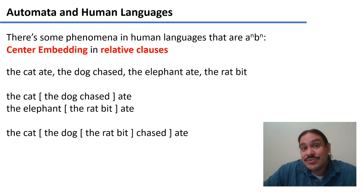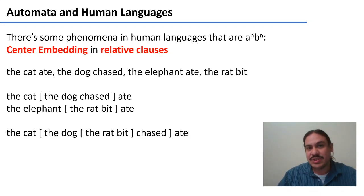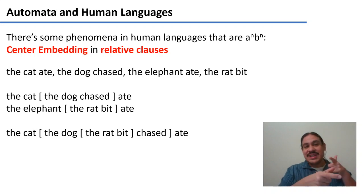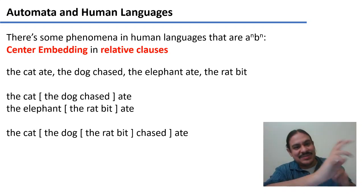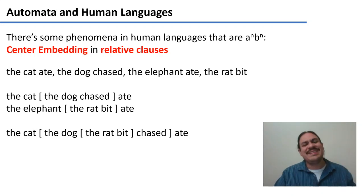There are structures in human language that have the form A^N B^N. One of them is center embedding in relative clauses. So we have sentences like 'the cat ate,' 'the dog chased,' 'the elephant ate,' 'the rat bit.' We can combine those in center embeddings — for example, 'the cat the dog chased ate,' meaning the dog chased the cat and that cat ate. Or 'the elephant the rat bit ate.' So you can have one main clause and one relative clause.